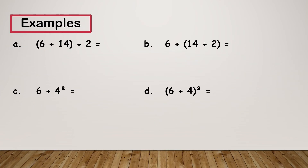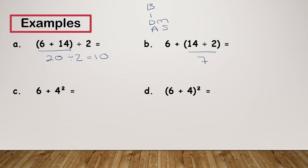Let's have a look at some examples that have more elements. I'll jot BIDMAS at the top of the screen so we can remember what order we need to do things in. I've got 6 bracket 6 plus 14 end bracket divided by 2 — brackets is the first thing I need to do. Even though division is above addition, because this is in brackets I do the bracket first. 6 plus 14 gives me 20, and 20 divided by 2 gives me 10. Next: 6 plus bracket 14 divided by 2 end bracket — I do my brackets first, so 14 divided by 2 gives me 7, and 6 plus 7 gives me 13.